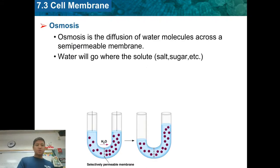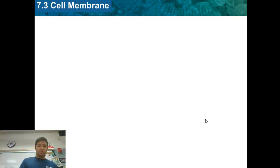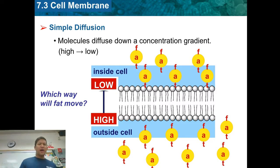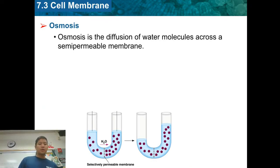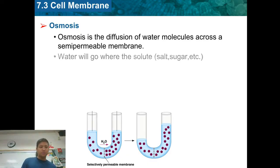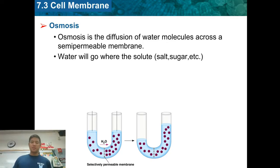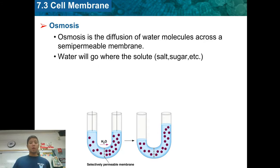Osmosis is just diffusion, but the molecule has to be water — water diffusing across a semi-permeable membrane. One important thing to remember with osmosis is that water will go wherever the solute is. Solute is things like salt and sugar. Wherever there is more solute, that's where water is going to go.